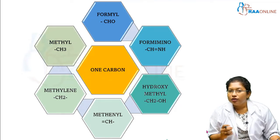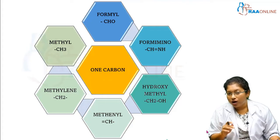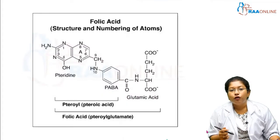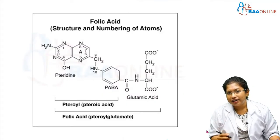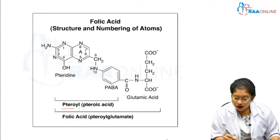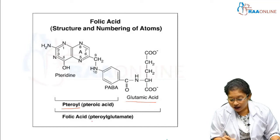The second thing we are going to see is who is going to carry these one carbon compounds. These are the various one carbon compounds, and who is going to carry that compound — it is folic acid. The folic acid structure contains pteryl and glutamic acid, so folic acid is a pteryl glutamate.